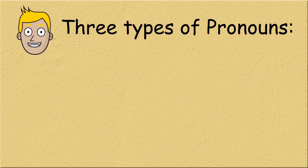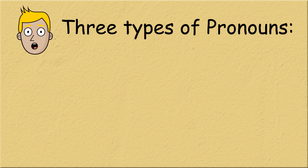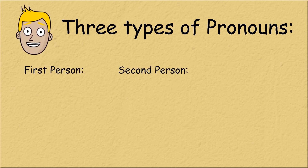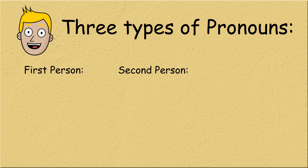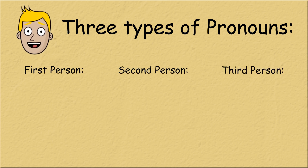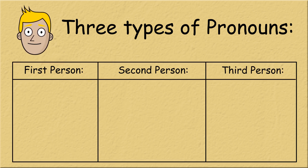There are three types of personal pronouns which we use. They are first person pronouns, second person pronouns and third person pronouns. First person pronouns are pronouns used when referring to yourself.